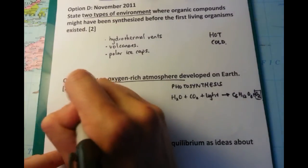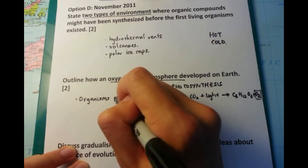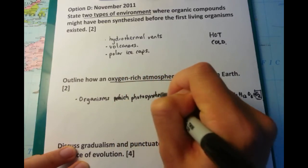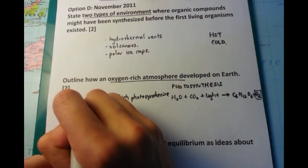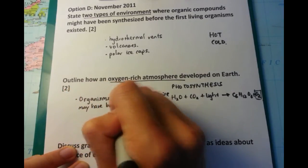So the organisms which first arose in an Earth atmosphere which did not have oxygen were autotrophs or producers. And they utilized the photosynthesis reaction or process. And as a result of that, they produced lots of glucose and, more importantly, lots of oxygen.